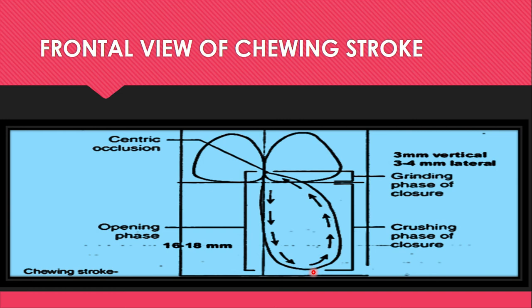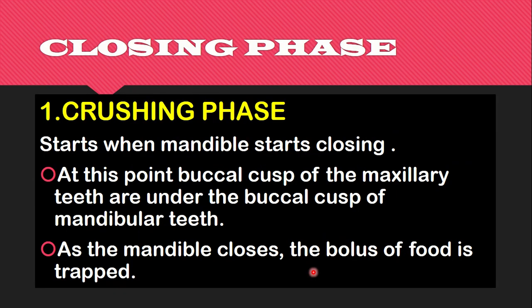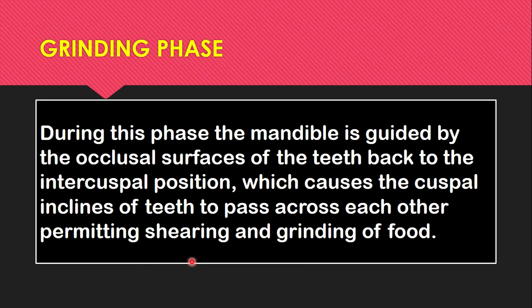The first phase of closure is the crushing phase. This starts when the mandible begins closing, at which point the buccal cusps of the maxillary teeth are positioned over the buccal cusps of the mandibular teeth. As the mandible closes, the bolus of food is trapped. This phase captures the bolus of food, and during the subsequent grinding phase the food is ground into pieces.